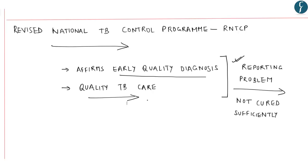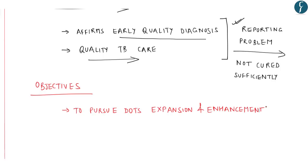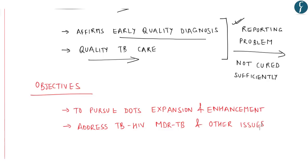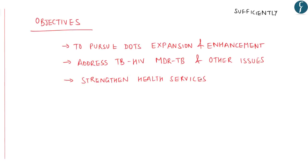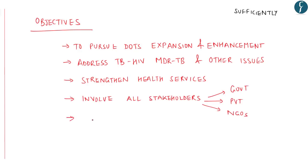The main objectives of the RNTCP are: to pursue quality DOTS expansion and enhancement by improving case finding and cure through an effective patient-centered approach to reach all patients, especially the poor; to address TB-HIV, MDR-TB and other challenges; to contribute to health system strengthening by collaborating with other health programs; to involve all healthcare providers — public, non-governmental and private sector — through public-private mix; and to enable and promote research for the development of new drugs.